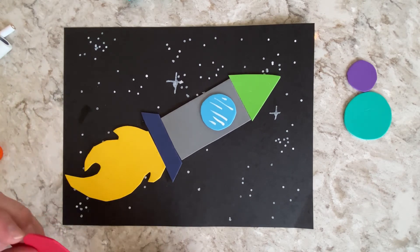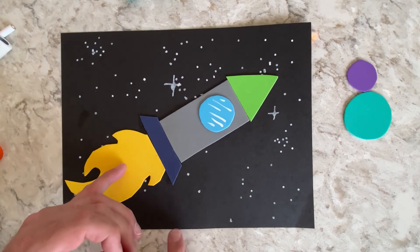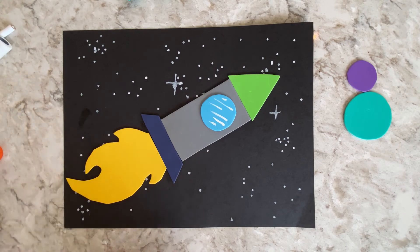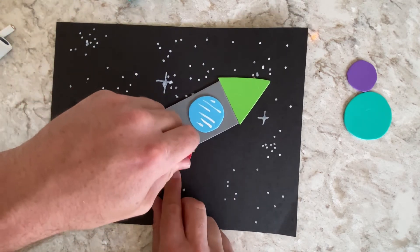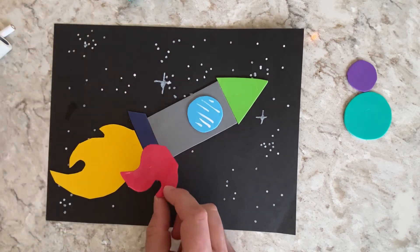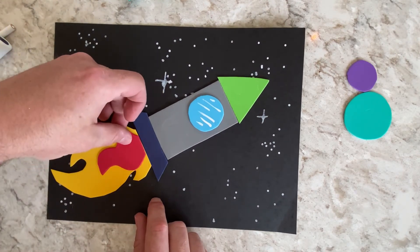The second piece, I want you to pick another color that would associate with fire. So, if this is like a yellowy-orange, let's go with a red. So, you're going to add some glue to the back of that, and I want you to put it right on top.